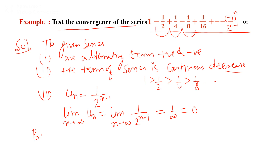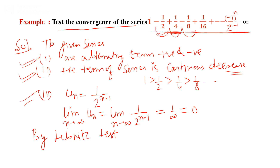By Leibniz's test: the terms are alternating in sign, the terms of the series are continuously decreasing, and the limit as n tends to infinity of the nth term equals 0. Therefore, the given series is convergent.